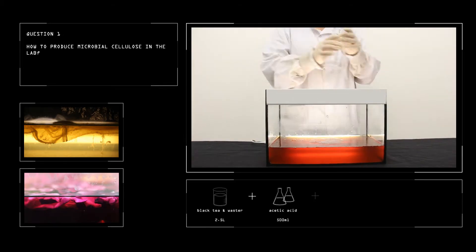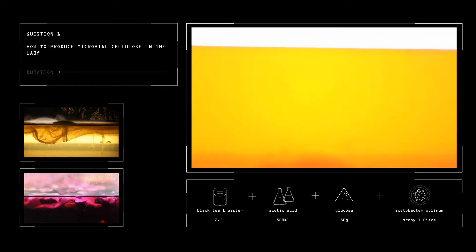Research begins from material experiment. The first step is to produce Microbiosellulose in the lab. It's a fermentation process. Bacteria will convert sugar into cellulose. After four days, it grows a layer of thin film in the liquid.